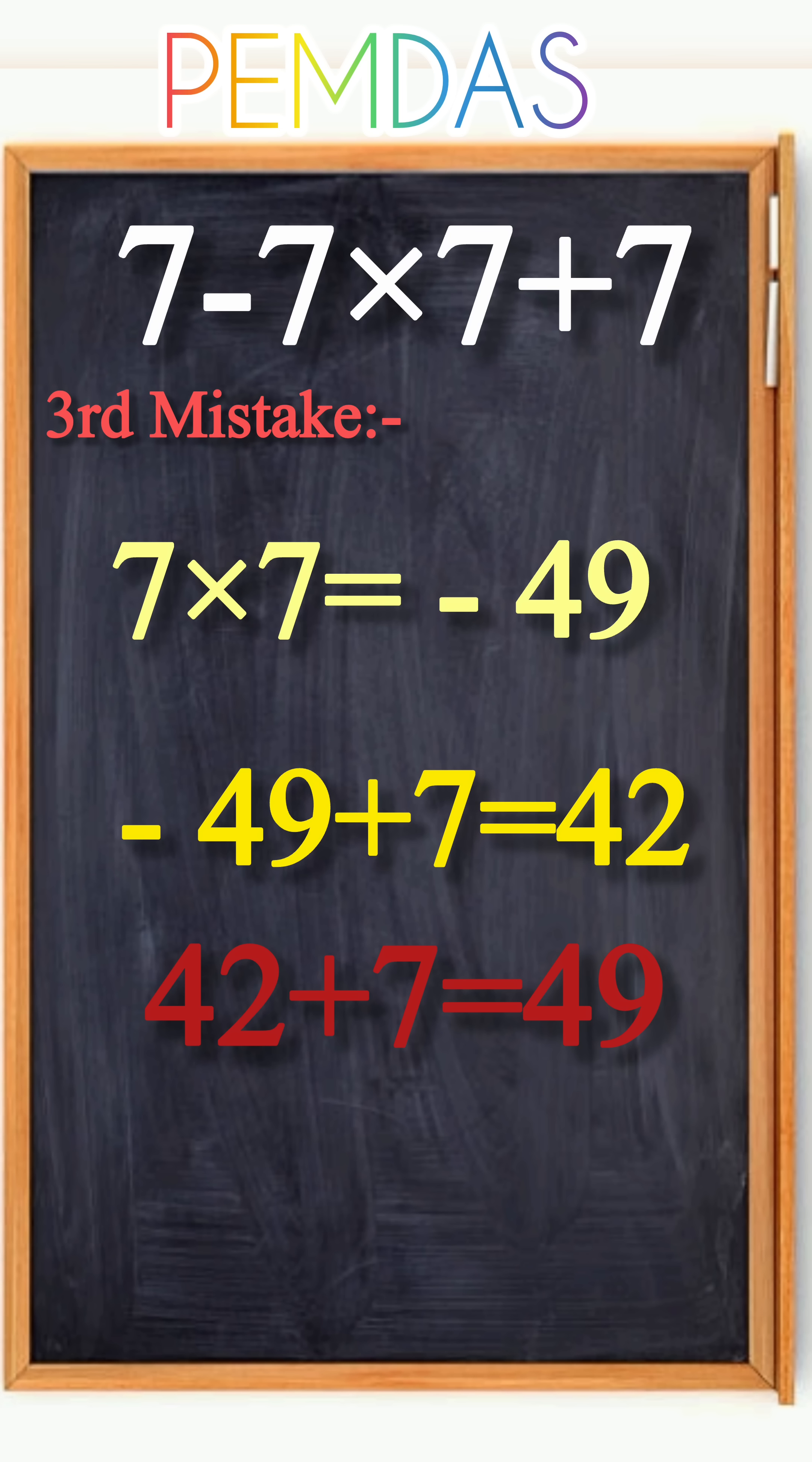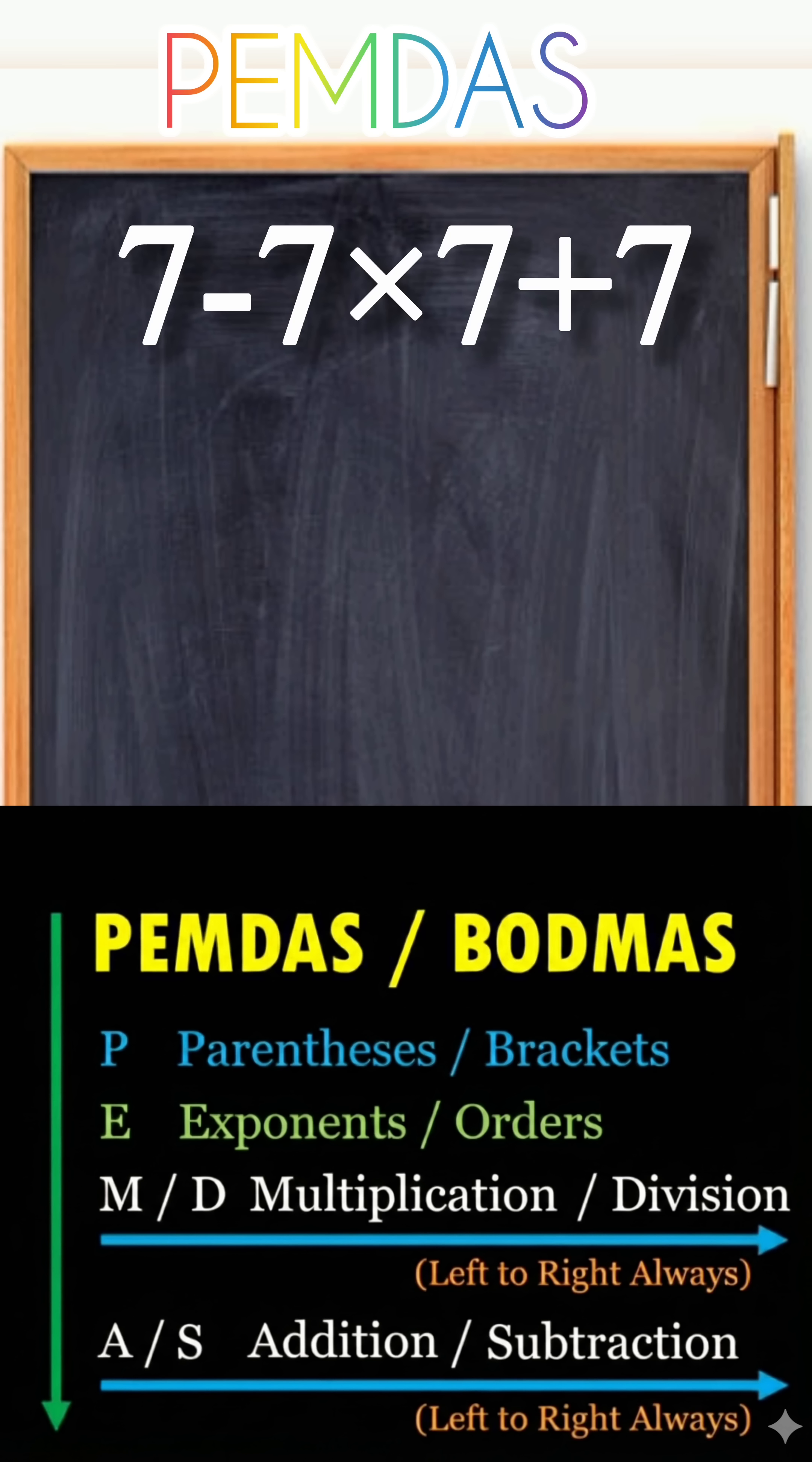So what's really happening here? It all comes down to the order of operations, often remembered as PEMDAS or BODMAS. This stands for Parentheses (or Brackets) first, then Exponents, Multiplication, Division, Addition, and Subtraction.